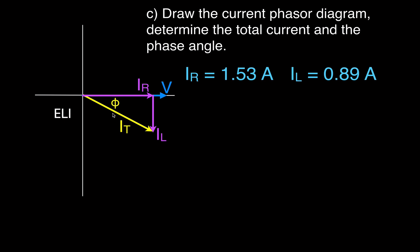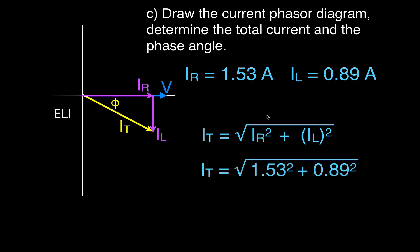We're going to calculate the total current and the phase angle using the Pythagorean theorem — a squared plus b squared equals c squared — to calculate the length of the hypotenuse. The total current equals the square root of the current through the resistor squared plus the current through the inductor squared. Plugging in the values, we get that the total current is 1.77 amperes. Again, that would be the max or RMS current depending on what you used.